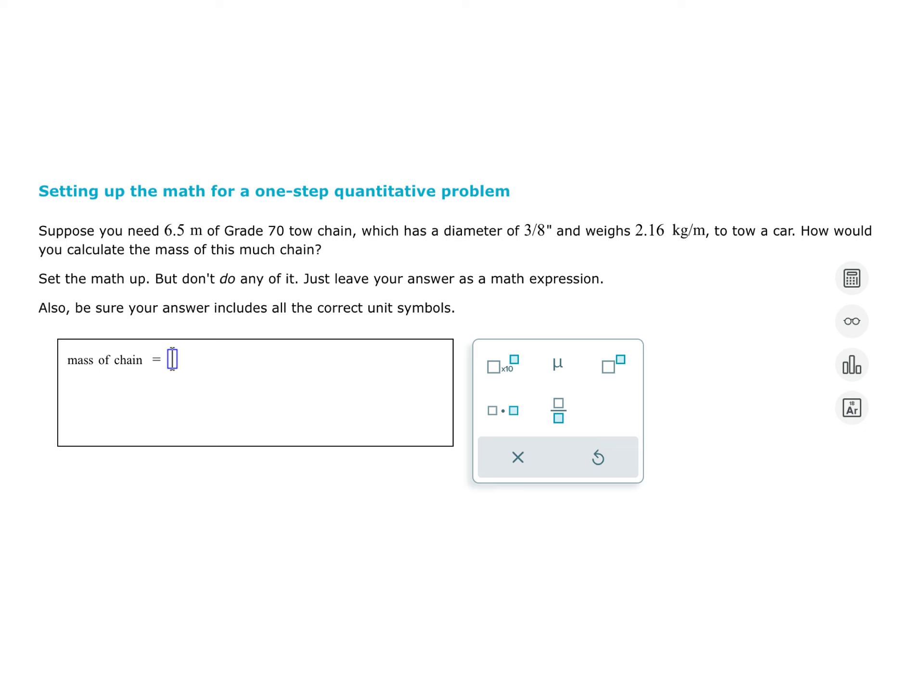So this first one here, suppose we need 6.5 meters of this chain. They give us all this information that we don't need to know. It doesn't really matter what kind of chain, the diameter of the chain. All that we need to know is that the chain weighs about 2.16 kilograms per meter. Calculate the mass of this chain. So what would that calculation look like?